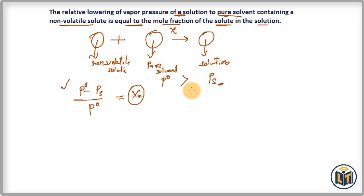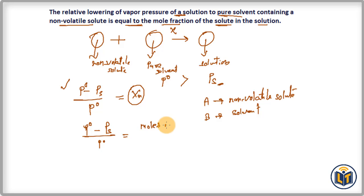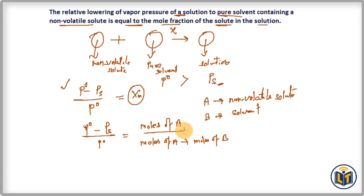The mole fraction of solute equals moles of solute upon moles of solvent plus moles of solute. If we assume two components in the solution — A as the non-volatile solute and B as the solvent — then the formula becomes: (P naught minus PS) upon P naught equals moles of A upon (moles of A plus moles of solvent B). This relation is used for concentrated solutions.